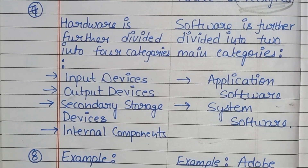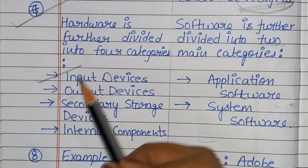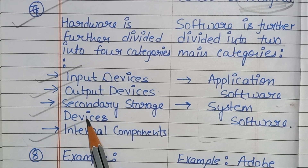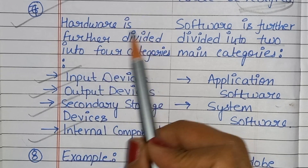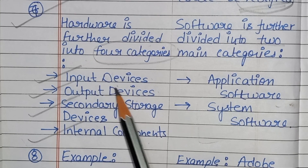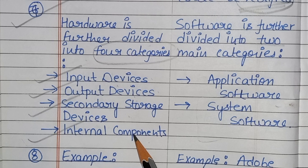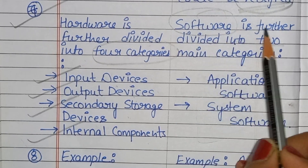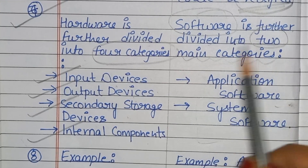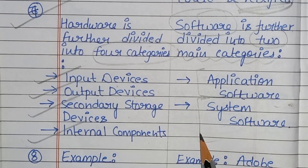Next difference: hardware is further divided into four main categories — input devices, output devices, secondary storage devices, and internal components. Software is further divided into two main categories — application software and system software.